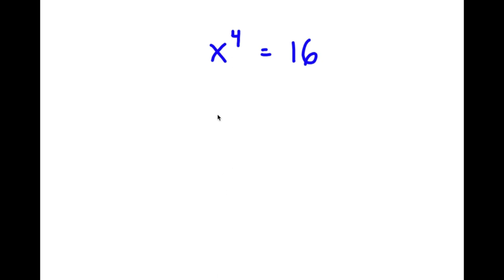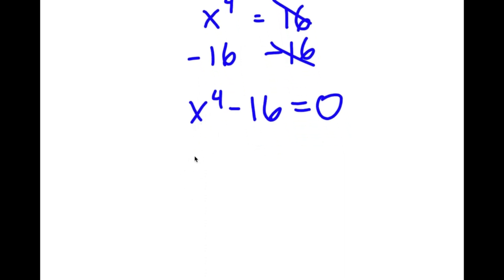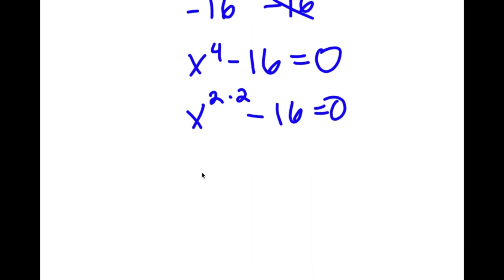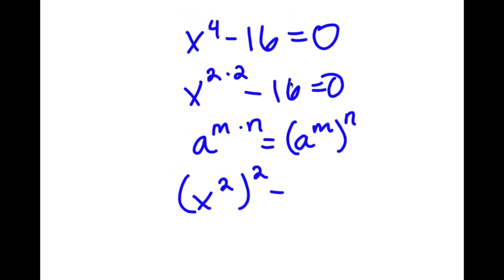So in this problem, I have x to the power of 4 is equal to 16. I'm going to start by subtracting 16 on both sides, so I'm left with x to the power of 4 minus 16 is equal to 0. Now, x to the power of 4 I'm going to rewrite as x squared to the power of 2, and I'm going to rewrite 16 as 4 squared, so I have x squared to the power of 2 minus 4 squared equals 0.